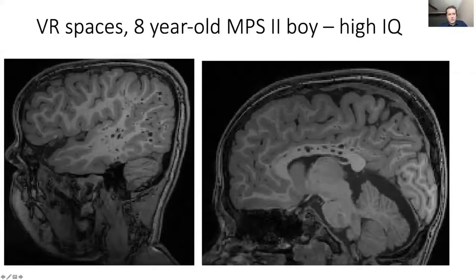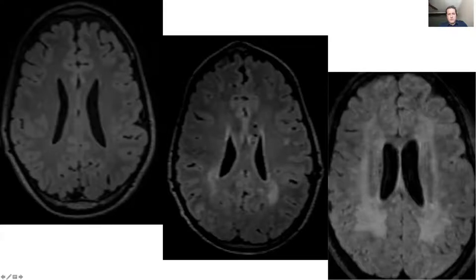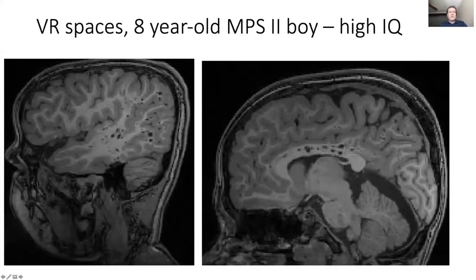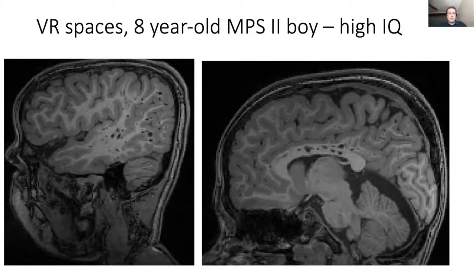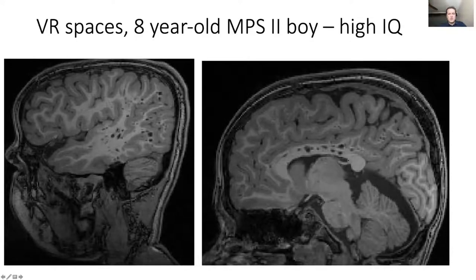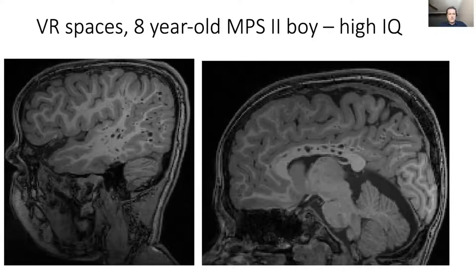Surprisingly, the Virchow-Robin spaces, the cheesy appearance of the brain that we see a lot in MPS patients, not only MPS-2, are very likely not related to cognitive functioning or behavior. For example, this eight-year-old boy has a lot of these spaces in the white matter and in the corpus callosum, but he was well functioning — his IQ was high — so they are not really related to cognitive function.